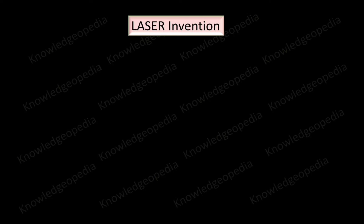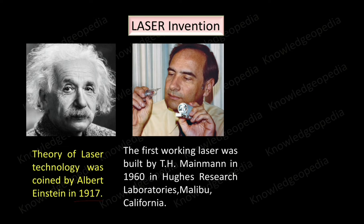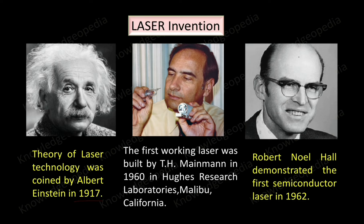Let me give a brief history of the laser. The theory behind laser working was given by Einstein, and the principle based on which the laser operates is stimulated emission of radiation. Once the theory was proposed, many scientists tried to develop different optoelectronic devices based on that principle — first they developed the maser, and then in the year 1960 the first working laser was built by T.H. Maiman in California, and that laser was a ruby laser. After two years, in 1962, Robert Neil Hall demonstrated the first semiconductor laser.